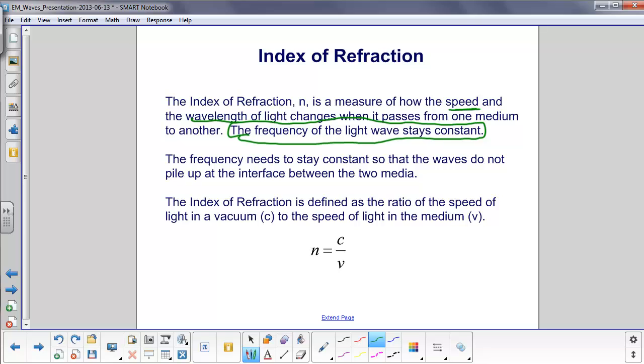And we know that that just doesn't happen. That doesn't happen in real life. So the definition of the index of refraction is the speed of light in a vacuum.